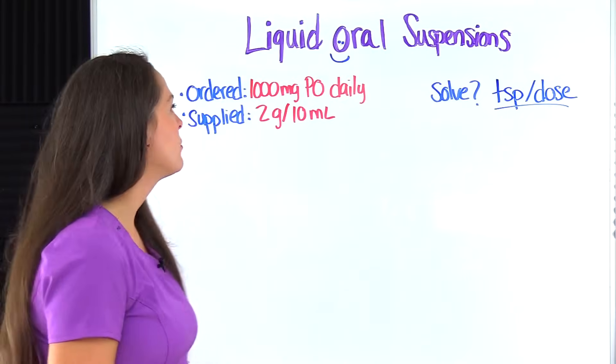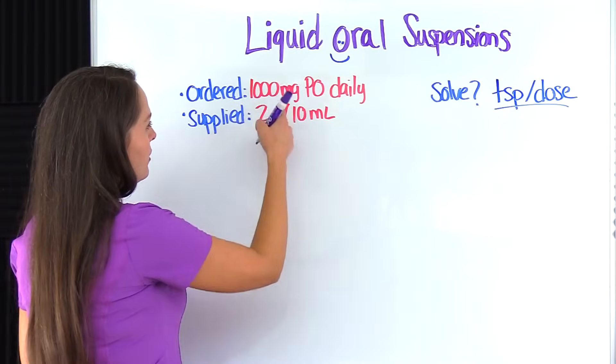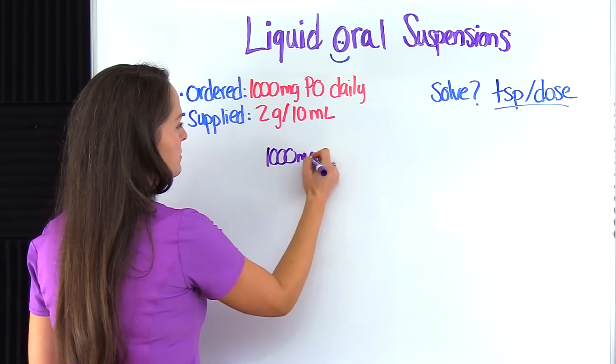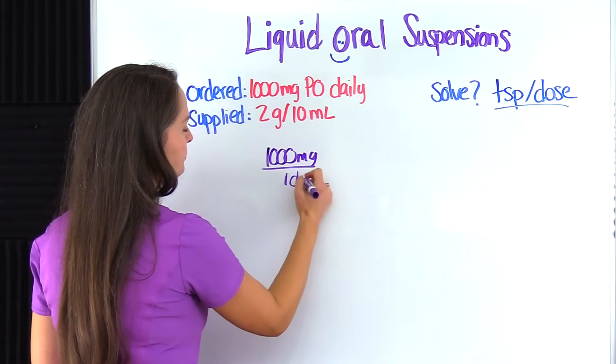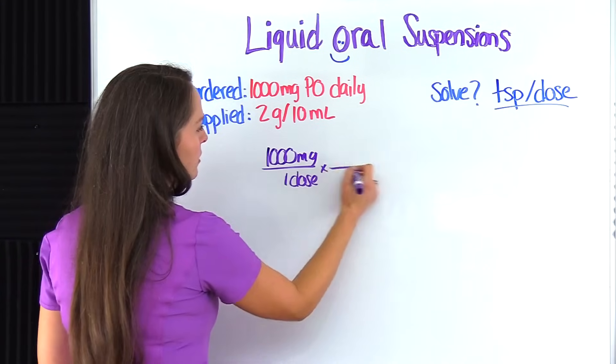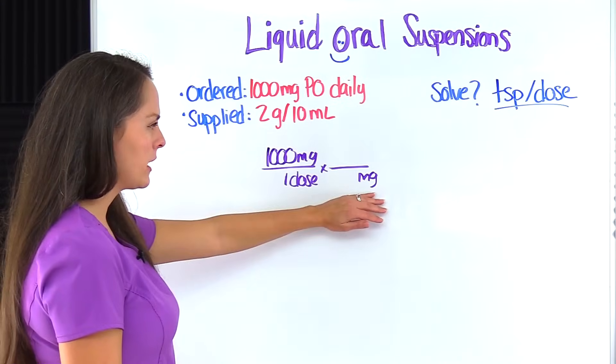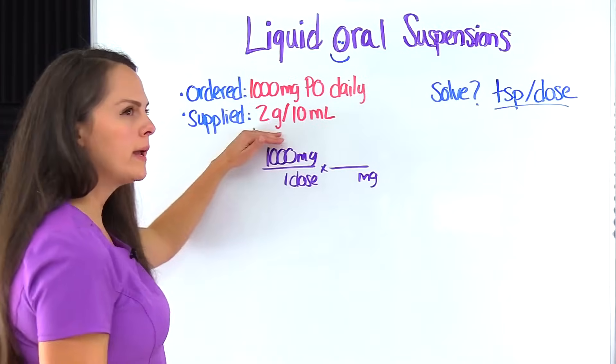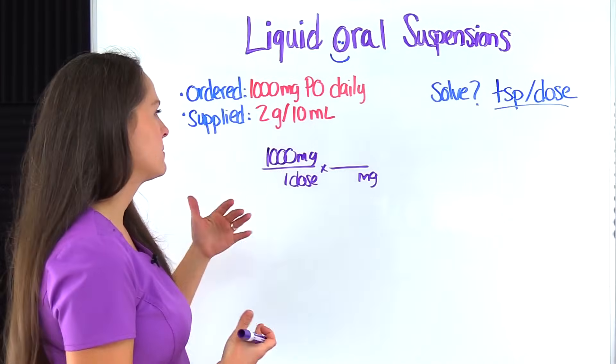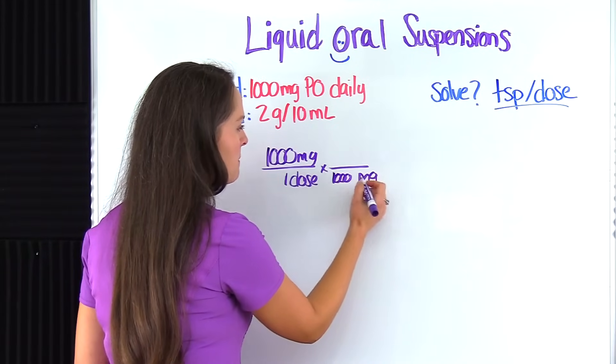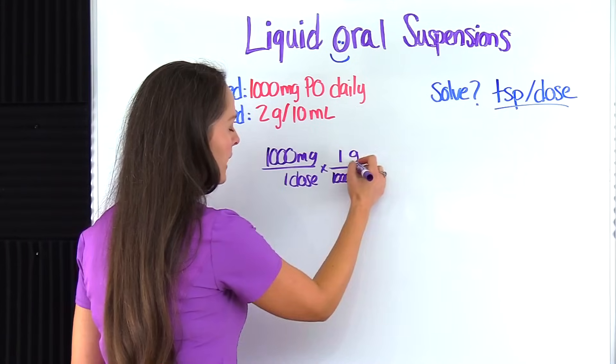So we're going to set up with what we're ordered. The healthcare provider has ordered 1,000 milligrams for one dose. Okay, here we're going to pull this unit over here, milligrams. Okay, so we're here in milligrams because that's what's ordered, but what we have on hand supplied with is in grams. So we got to get to grams.